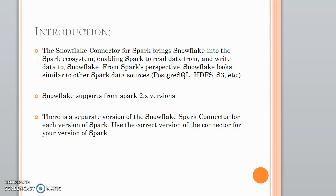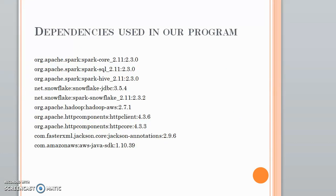Snowflake supports from Spark version 2 onwards only. There is a separate version of the Snowflake Spark connector for each version of Spark — for example, Spark 2.1, 2.2, and 2.3 each have a separate Snowflake connector. You have to use the appropriate version when connecting with Spark. These are the dependencies which we have used in our program, and you have to copy them into your Maven or SBT to avoid confusions.